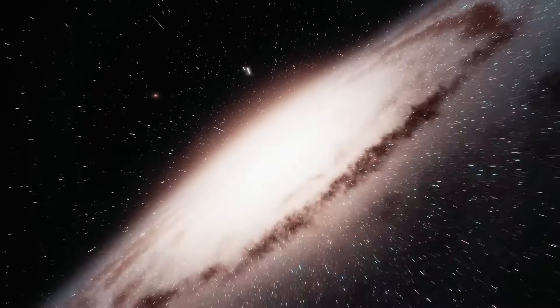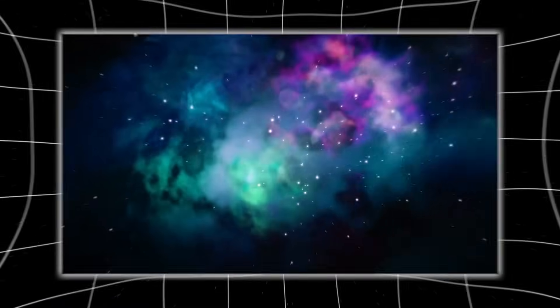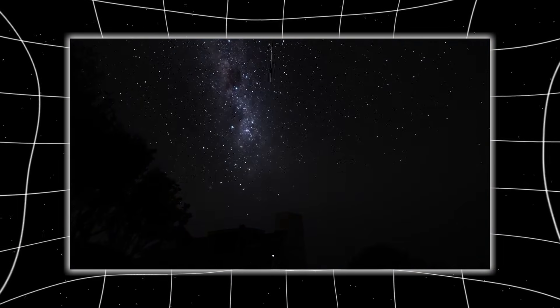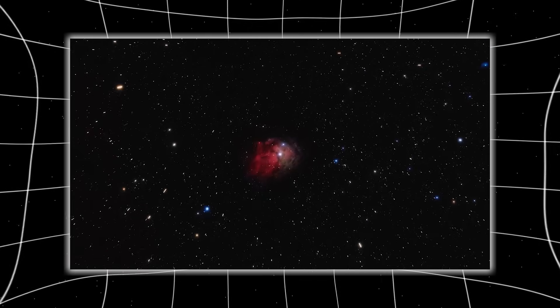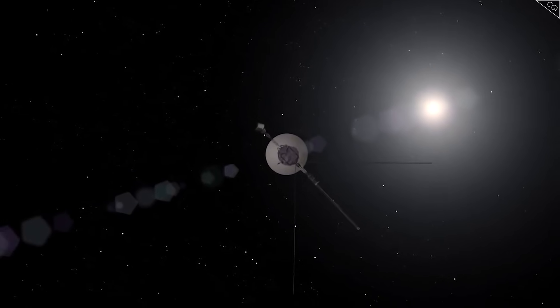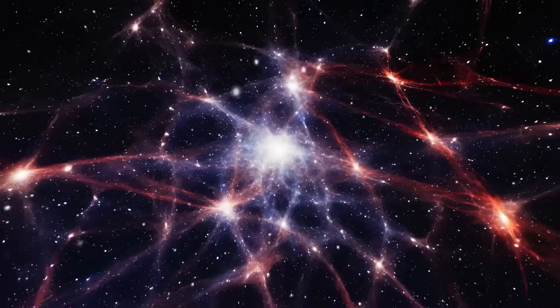It wasn't just geometry. It was a map, encrypted across time and space, pointing not to a location but to a state. A transformation. One physicist described it as a bridge, but one that only becomes real once you cross it. But cross into where, or what? If Voyager had triggered something, had opened that bridge, was it still on our side of it? Or had it already left us behind?